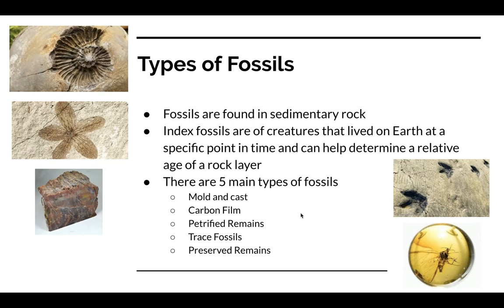So there are five main types of fossils. Some are more common than others. The most common type of fossil is this one right here. This is called a mold and cast. So some living creature, usually something that contained hard parts, so bones or shells, was buried in sediments.